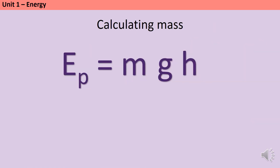As with all of your GCSE physics equations you need to be able to rearrange this equation to make any of the terms the subject. Let's look at how we would do that to calculate mass. Right now mass is being multiplied by gravitational field strength and by height, so to get rid of g and h on the right hand side we use the inverse operation — divide by them — because anything divided by itself disappears. Whatever we do to the right hand side we do to the left hand side, so we divide both sides by g and h.